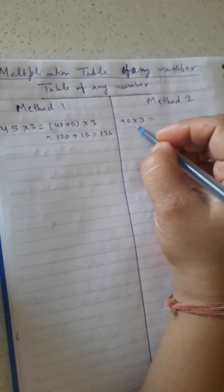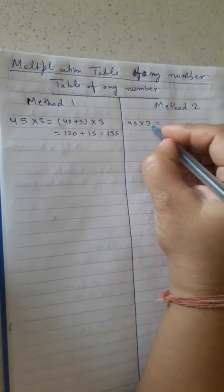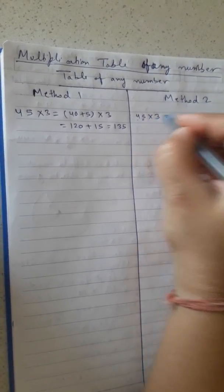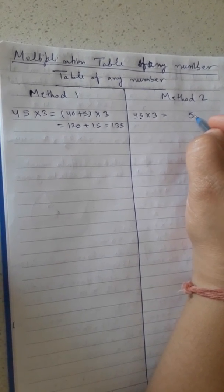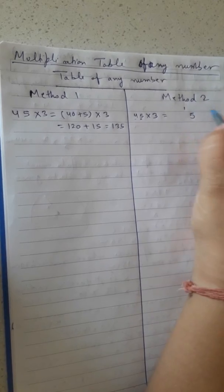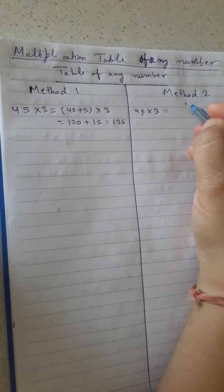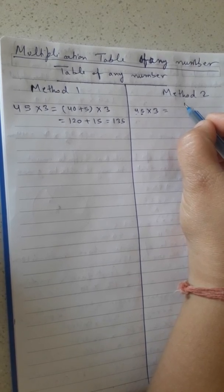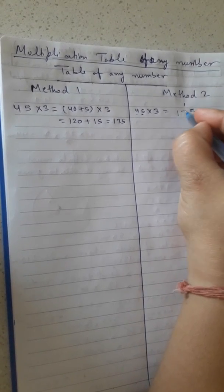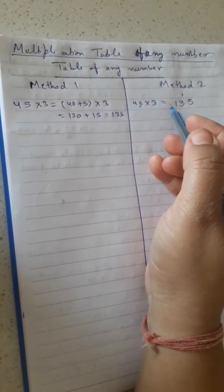Method 2: We don't expand 45 — we multiply directly. First, the unit digit: 5 × 3 = 15. We write down 5 and carry 1. Then 3 × 4 = 12, plus the carry of 1 gives 13. So the answer is 135. This is the second method — you can choose whichever is easier for you.